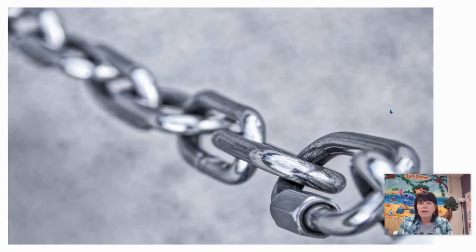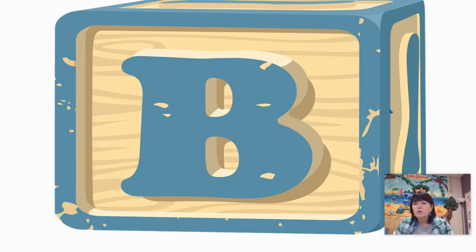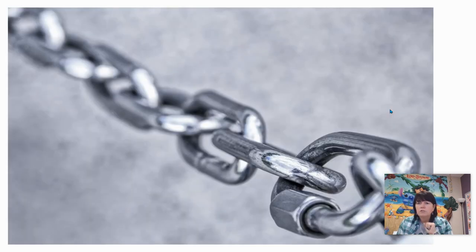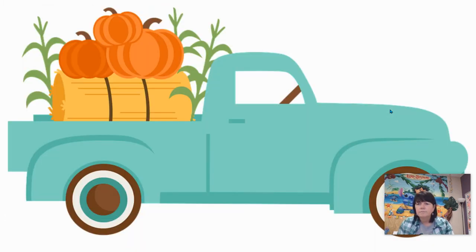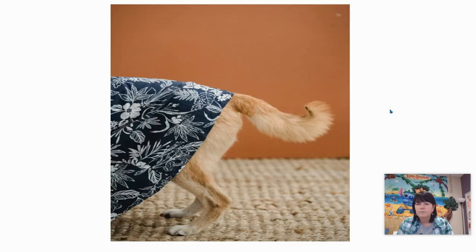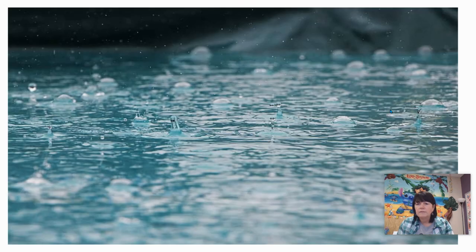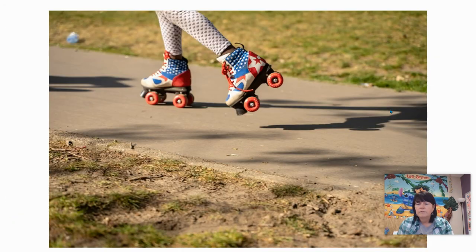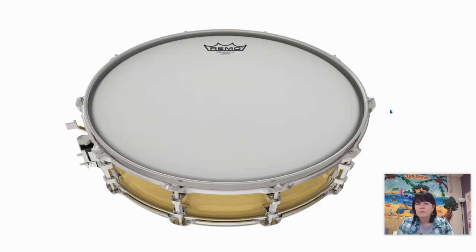I'm going to go back up to where we were at. I'm going to say the word again and you practice saying the beginning sound with the ending sound — just taking it apart in two parts. So this would be bl-ock. Bl-ock. Block. So block — you do it. Chain. Truck. Leaf. Tail. Rain. Skate. And drum.